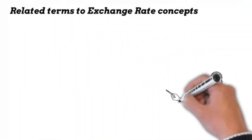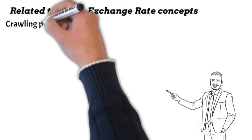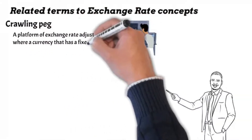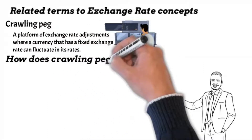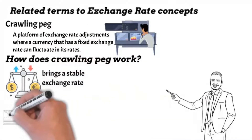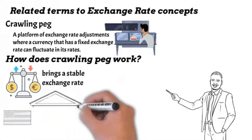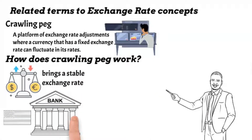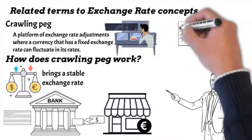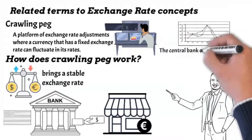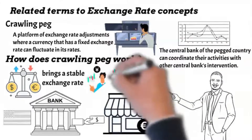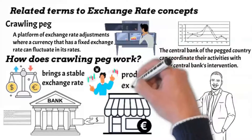Related terms to exchange rate concepts: crawling peg refers to a platform of exchange rate adjustments where a currency that has a fixed exchange rate can fluctuate in its rates. A stable exchange rate is brought about when the central bank of the country with the pegged currency can sell or buy their currency on foreign exchange markets. In days of high volatility and volume, the central bank of the pegged country can coordinate their activities with other central banks' intervention. All these measures will produce a stable exchange.